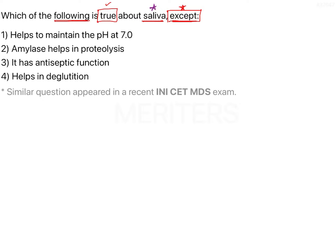Saliva is one of the most important body fluids present in the oral cavity. It is synthesized and secreted by three major salivary glands and by numerous minor salivary glands in the oral cavity. The four options all relate to the functions of saliva, so we must be familiar with the composition and functions of saliva.